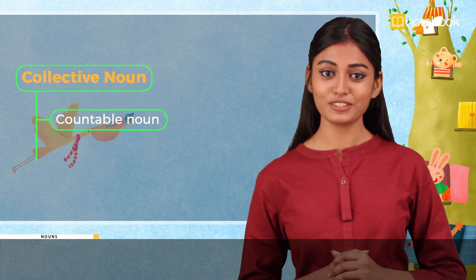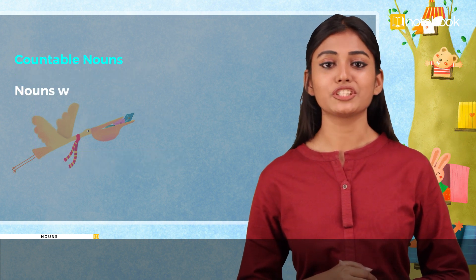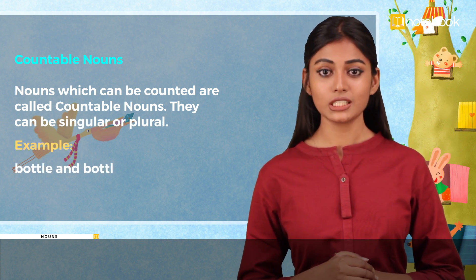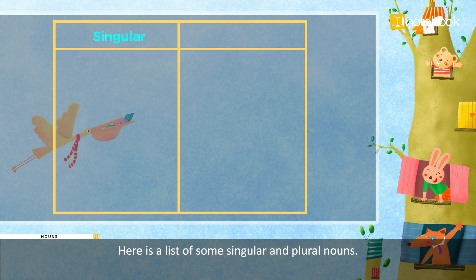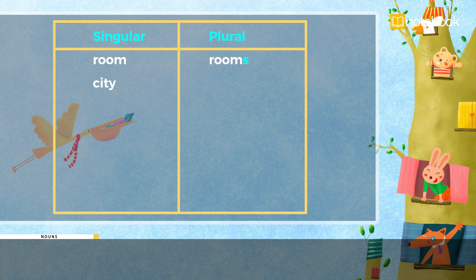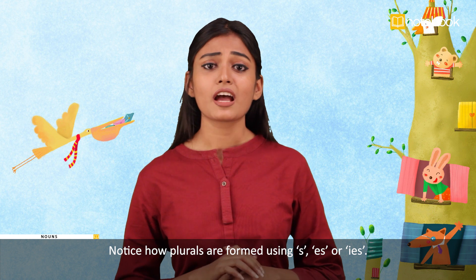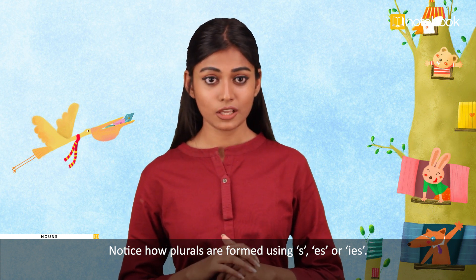Next, we shall discuss countable and uncountable nouns. Nouns which can be counted are called countable nouns. They can be singular or plural. For example, bottle and bottles. Here is a list of singular and plural nouns: room/rooms, city/cities, bush/bushes, lady/ladies, story/stories, life/lives. Notice how plurals are formed using 's', 'es', or 'ies'.